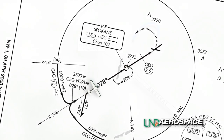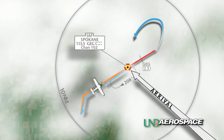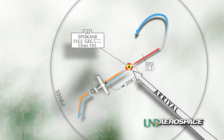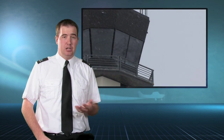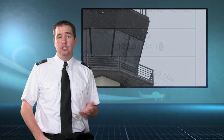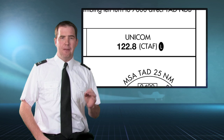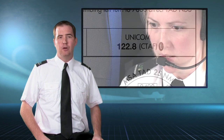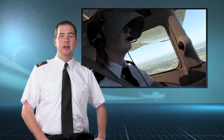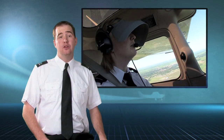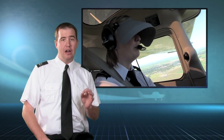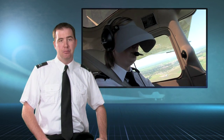After becoming established on the final approach course, the pilot will be granted a frequency change by ATC. This will either be a change to the control tower frequency or to a common traffic advisory frequency. Regardless, the pilot should promptly contact the new frequency to state her intentions. In the case of an airport without an operating control tower, the pilot must communicate with any other aircraft in the vicinity to ensure aircraft separation throughout the approach.